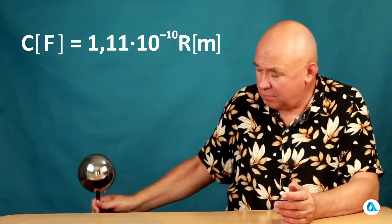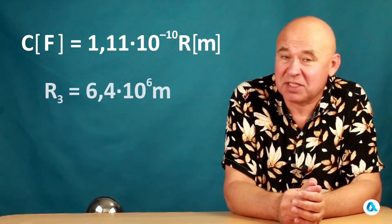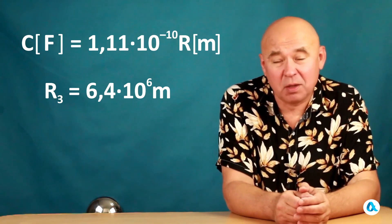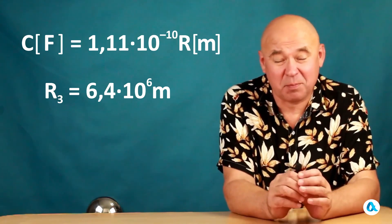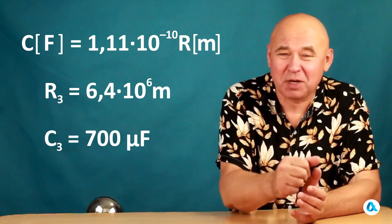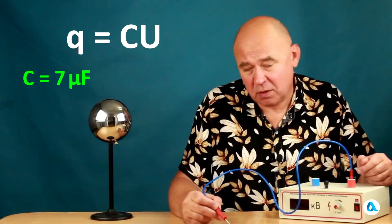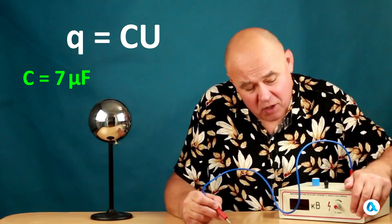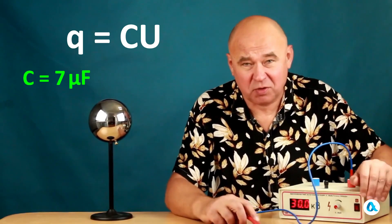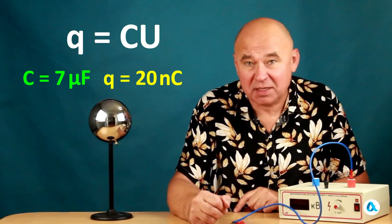But let's take a larger sphere the size of the earth. Then its radius will be 6.4 × 10⁶ meters. Substituting into this formula, we find that the capacitance of a conducting sphere the size of the earth is only 700 microfarads. And now using the formula Q = CU, knowing the capacitance of this sphere, I will also know the charge to which it is charged from a 30 kilovolt source. This charge is equal to 2 × 10⁻⁸ coulombs.